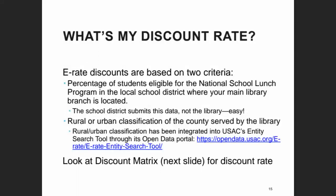The other criterion is whether your library system is overall considered rural or urban. At some brackets there's a slight advantage to being rural versus urban. If you have multiple branches, if two of them are rural and one is urban, you're considered overall urban. If two are rural and one is urban — meaning two rural and one urban — you're rural. If you had four branches with two rural and two urban, the tiebreaker is the classification for the main branch.